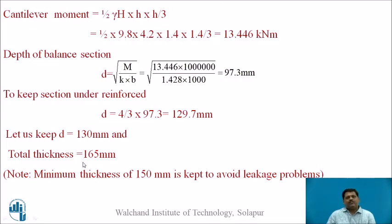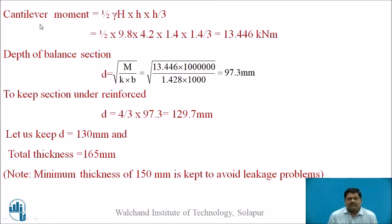The cantilever moment is analogous to a cantilever beam fixed at one end and free at the other. Where the base is a rigid joint, a moment definitely exists. The cantilever moment is calculated as 1.5 × γ × H × h², giving a value of 13.446 kN·m, where H is the height of the tank and h is the height over which cantilever action takes place.